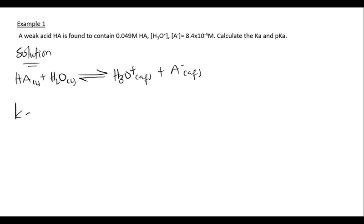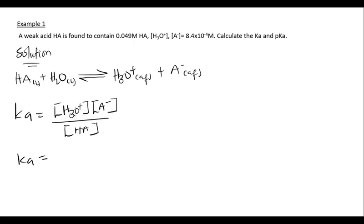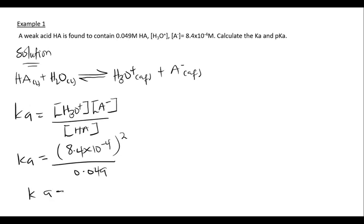From this equation, Ka = [H₃O⁺][A⁻] / [HA]. Since [H₃O⁺] = [A⁻] = 8.4 × 10⁻⁴, we square that value: Ka = (8.4 × 10⁻⁴)² / 0.049. This gives Ka = 0.000144, or Ka = 1.44 × 10⁻⁵.